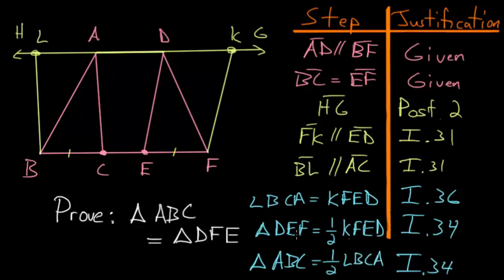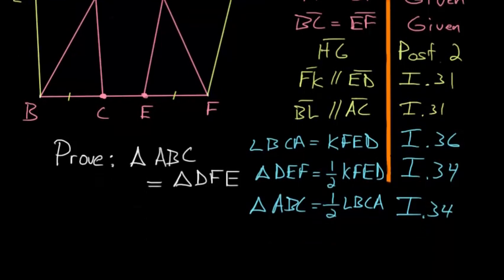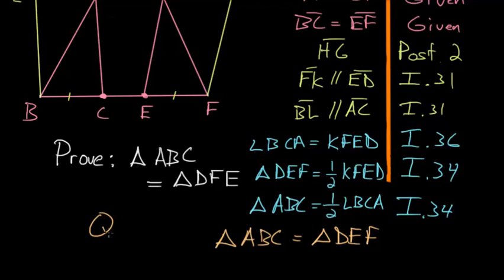And since triangle DEF is half of this parallelogram and triangle ABC is half of this other parallelogram, and we know that the two parallelograms are equal, we can conclude that the halves of equal things are equal to one another. Or in other words, we now know that triangle ABC is equal to triangle DEF, and we can finish with Q.E.D.